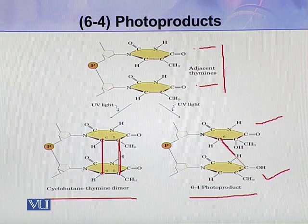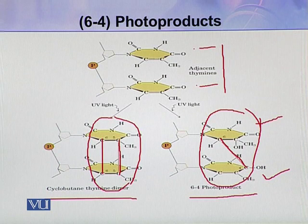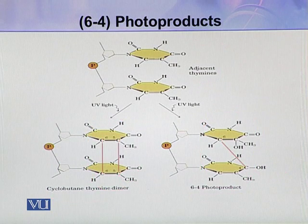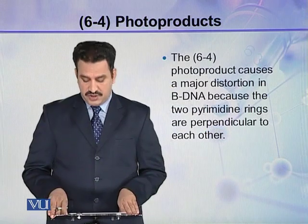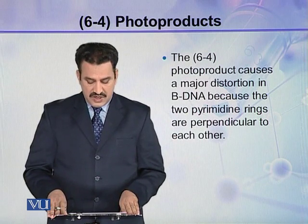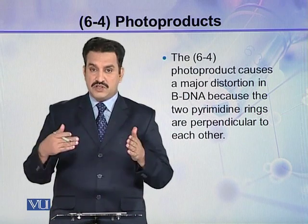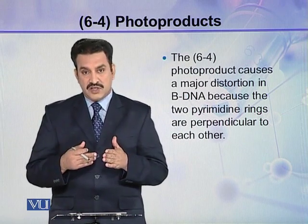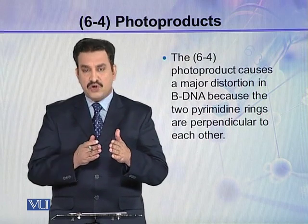By the formation of this bond between C4 and C6, a dimer is formed. Both CPD and 6-4 photo products are dimers, but their mode of formation differs. The 6-4 photo product causes a major distortion in B-DNA because the two pyrimidine rings become perpendicular to each other.